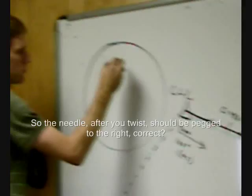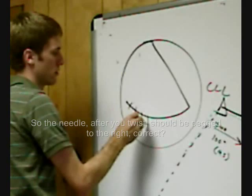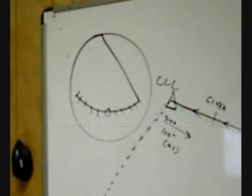So the needle, after you twist, should be pegged to the right, correct? Yeah. As soon as it comes un-pegged, you're getting positive guidance from the VOR. You're going to consider this established.